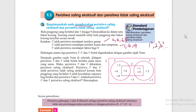V adalah peristiwa mendapat faktor bagi 9. Faktor bagi 9 - hasil darab yang dapat 9: 1 darab 9, 3 darab 3, 9 kali 1. Jadi kita ada 1, 3, dan 9.